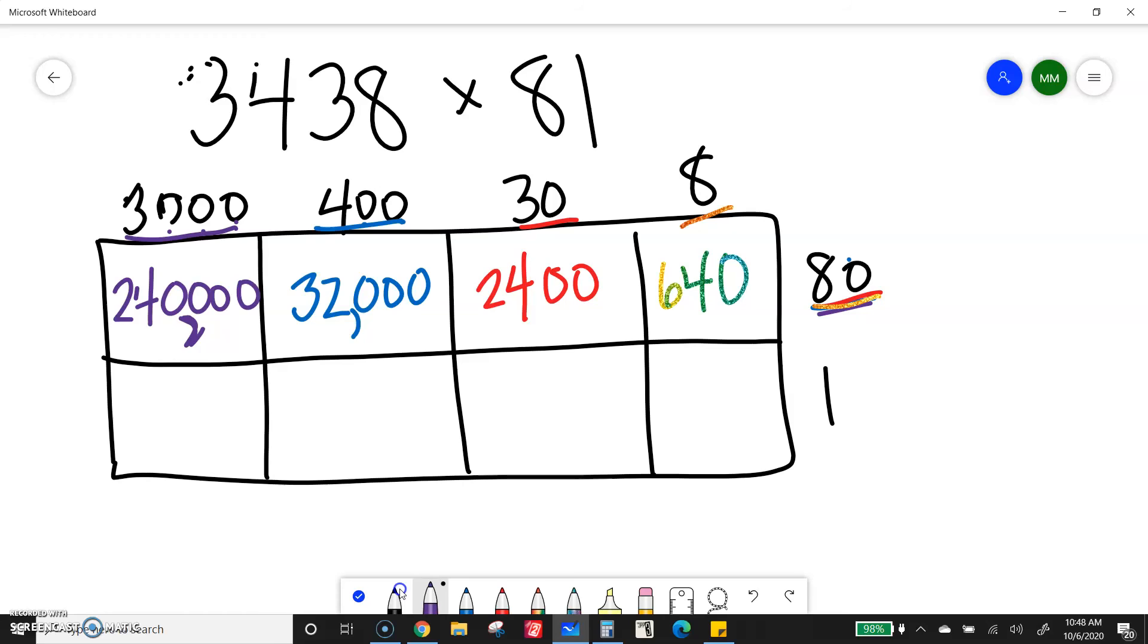Now I will do my next row. This one is easy because it's just times 1. So 3,000 times 1 is 3,000. Anything times 1 is itself. Don't need to add any zeros because 1 doesn't have any zeros on it. So that row is a little simpler.